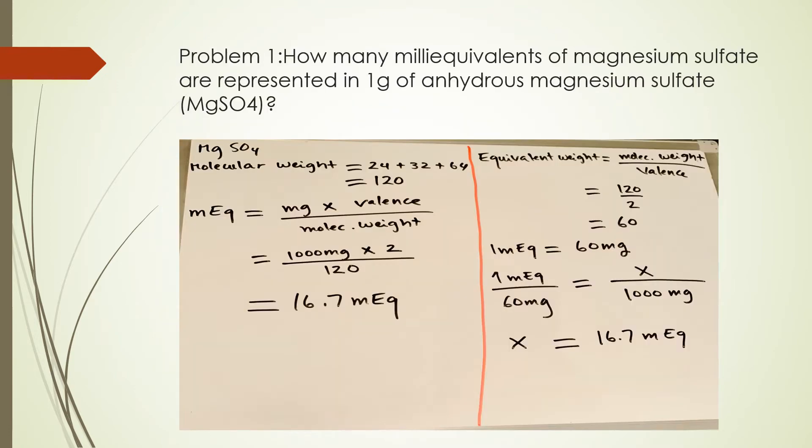Let's look at this first problem. How many milliequivalents of magnesium sulfate are represented in one gram of anhydrous magnesium sulfate? The first way we can solve this problem: we're being asked for milliequivalent. We can use the first formula in the previous slide, which is milliequivalent equals milligram times valence divided by molecular weight.